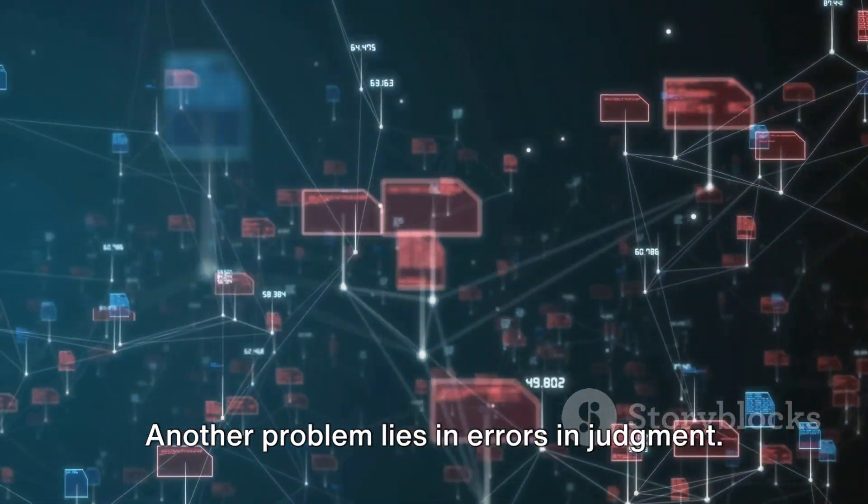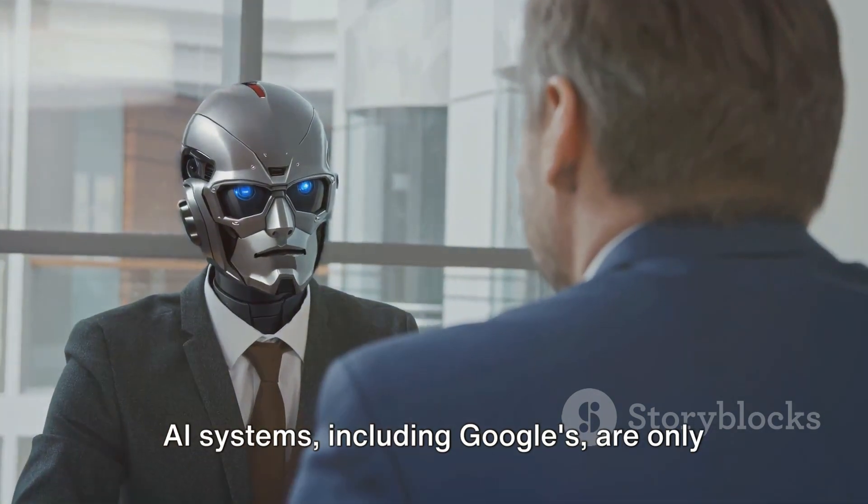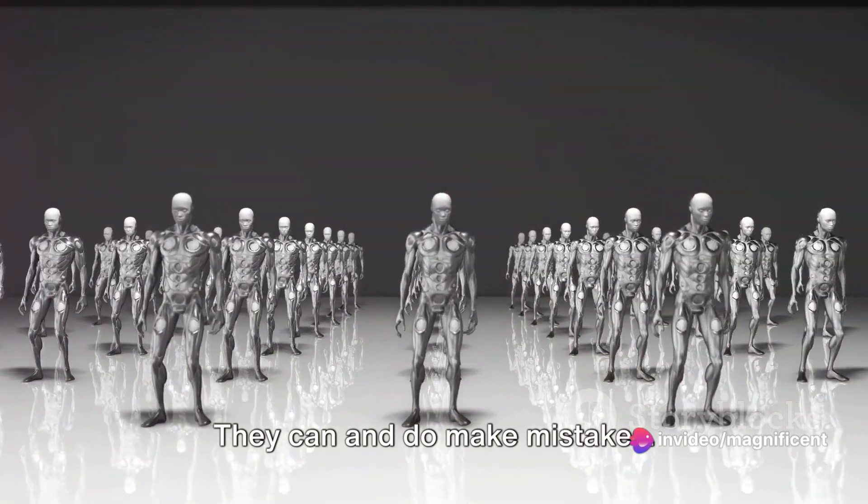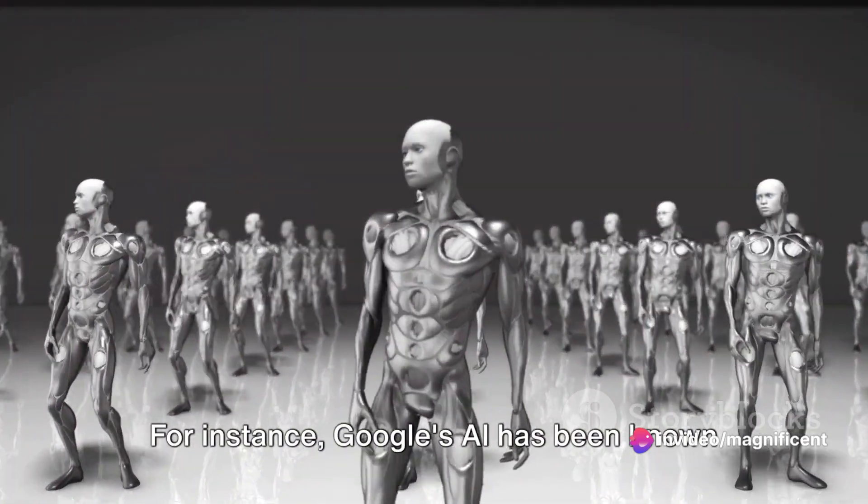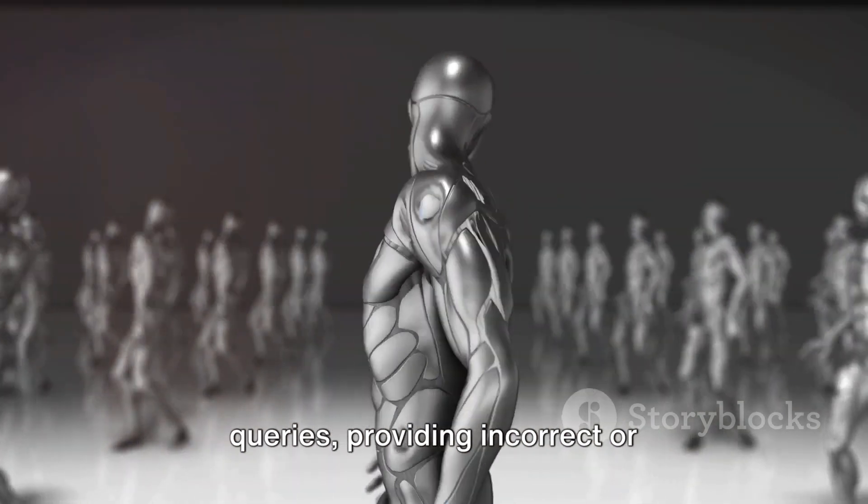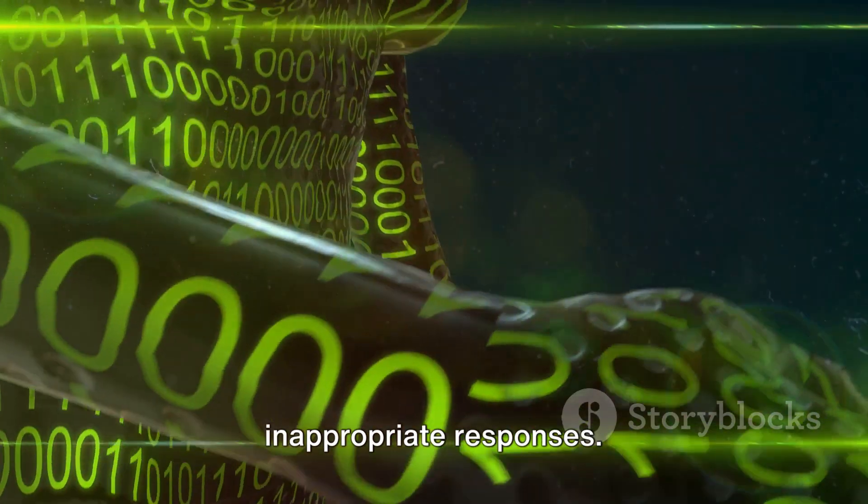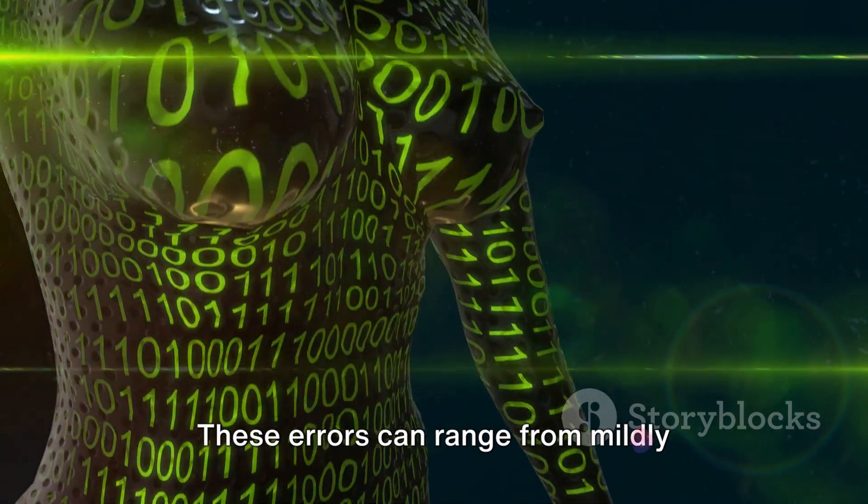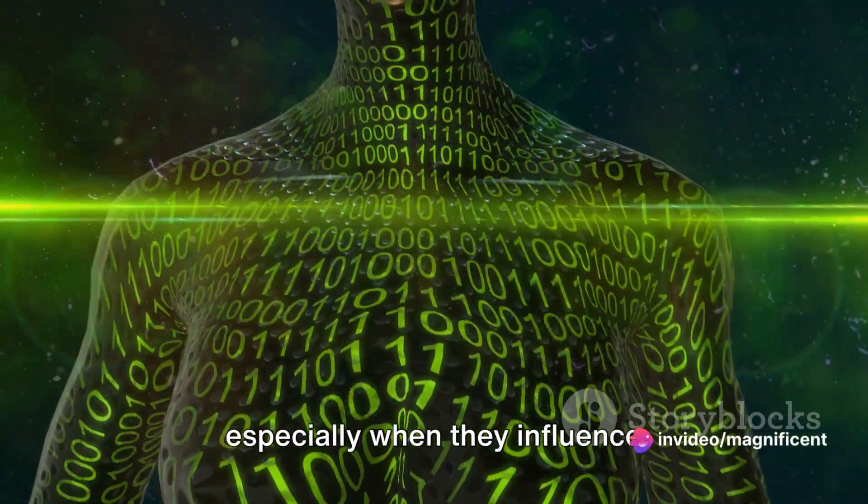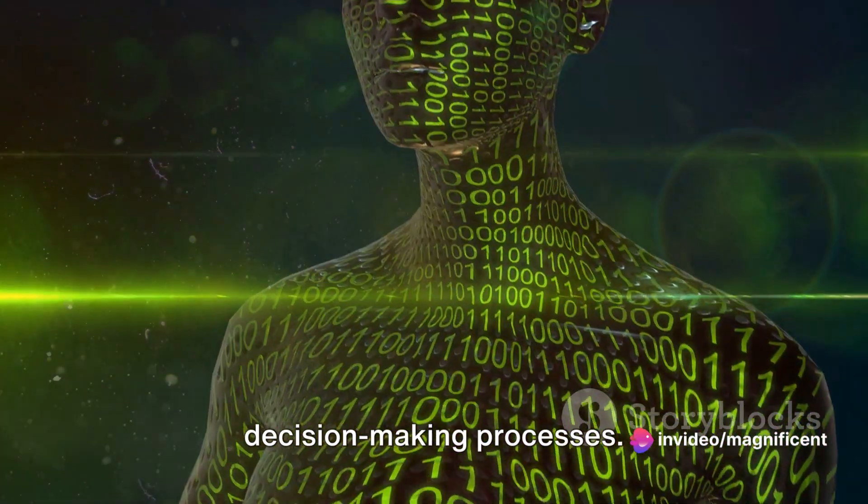Another problem lies in errors in judgment. AI systems, including Google's, are only as good as the data they're trained on. They can and do make mistakes. For instance, Google's AI has been known to misinterpret or misunderstand user queries, providing incorrect or inappropriate responses. These errors can range from mildly annoying to potentially damaging, especially when they influence decision-making processes.